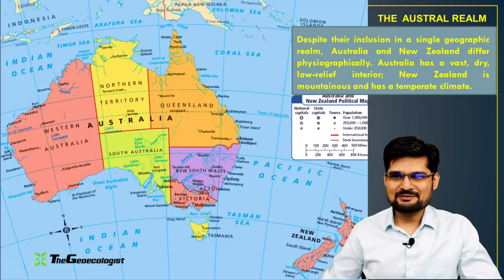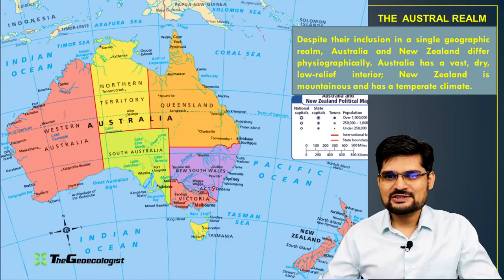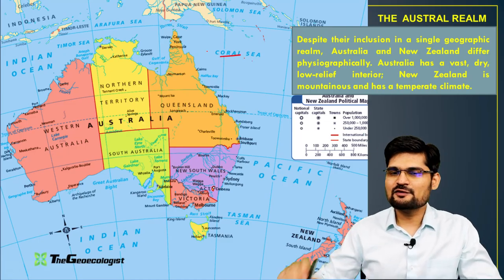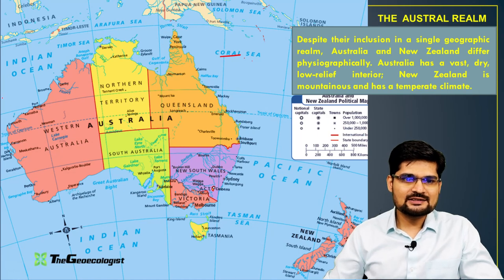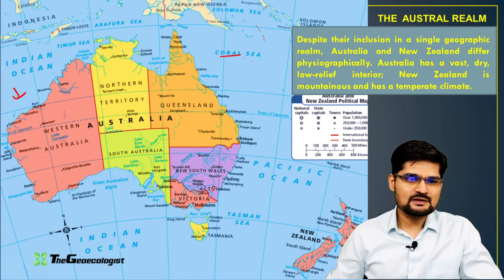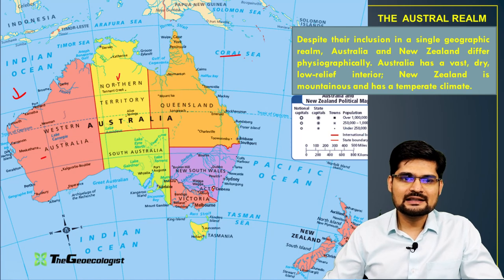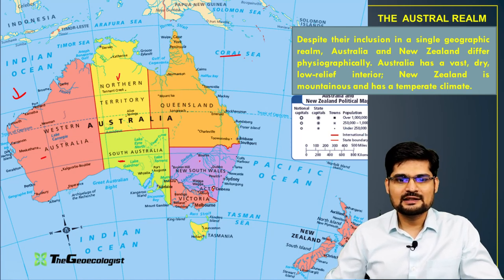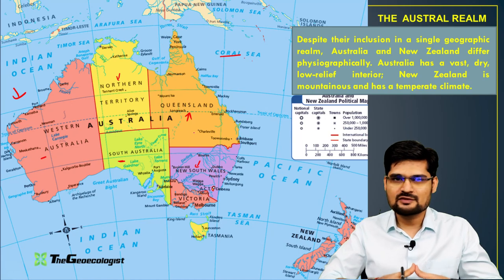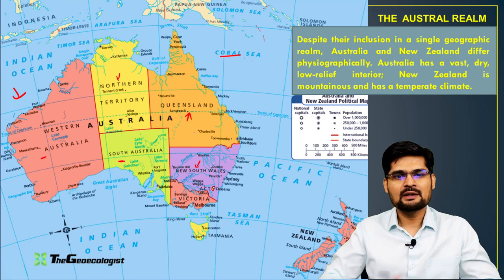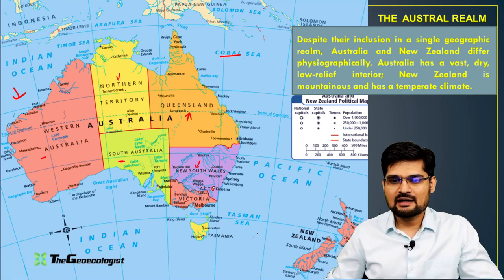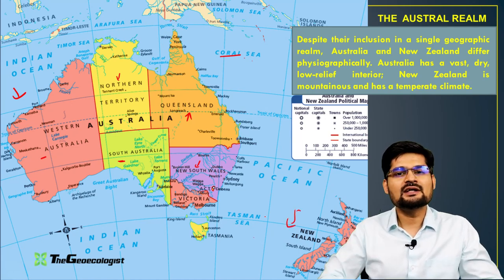Let's discuss about the Austral Realm. These are the territories around Australia — Western Australia, Northern Territory, Southern Australia, New South Wales and Queensland. That is the major division of the Austral Realm in terms of Australia, and then we have the North and South portions of New Zealand.